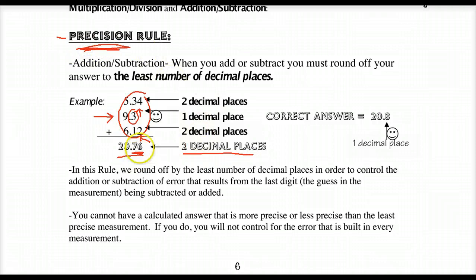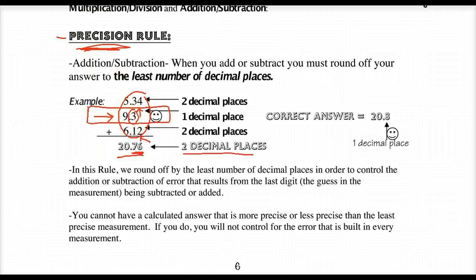Where is your guess? If your guess is in the smaller part of the overall measurement, you're more precise. We have to maintain the weakest link — the weakest link is the measurement with the least amount of significance. Therefore, my answer has to be rounded to the least level of significance. That's how the precision rule works.